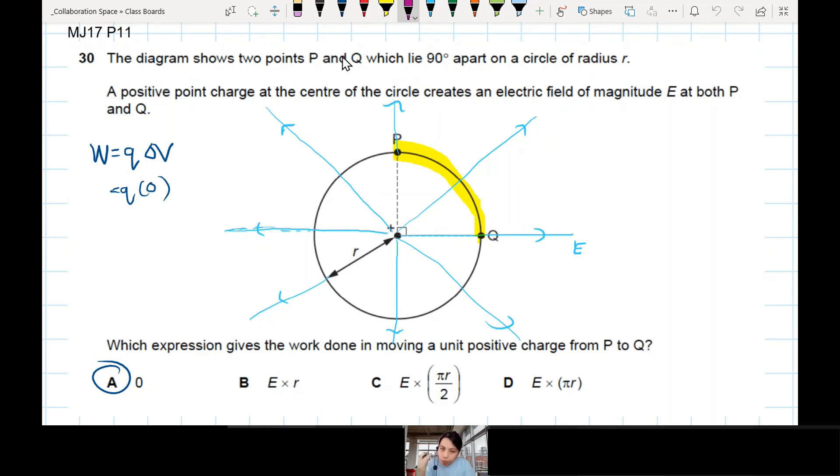If we want to draw an equipotential line, equipotential means all along this line, the potential is the same. I need to make sure my line is perpendicular to the field. So this circle, actually, this nice circle, is actually an equipotential line.